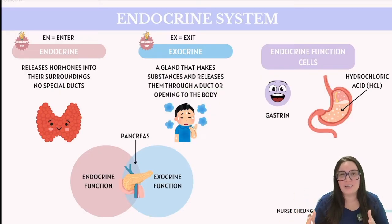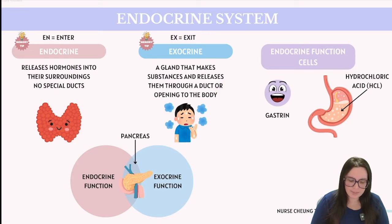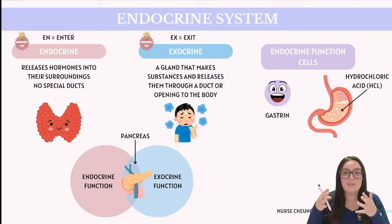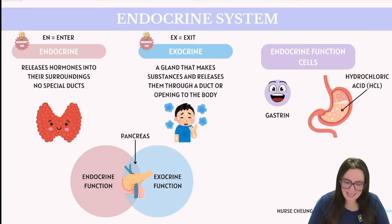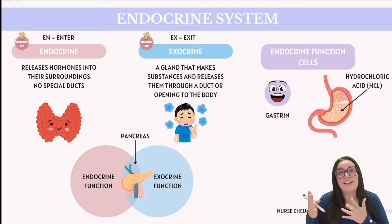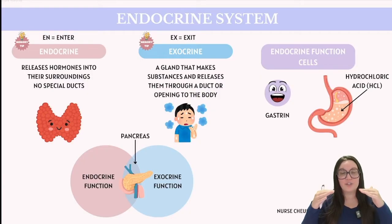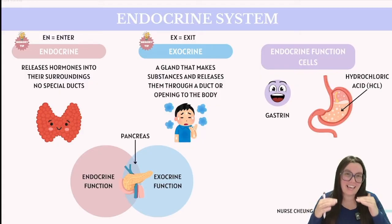There's a great memory trick when it comes to remembering the differences between these two types of glands. When it comes to endocrine, I like to think of the EN in endocrine and the EN in enter, which means that endocrine glands secrete hormones directly into the bloodstream — they enter their internal environment. Whereas the EX in exocrine and the EX in exit lets us know that exocrine glands use ducts to transport secretions out of the gland and either onto the surface of our body or our body cavities.